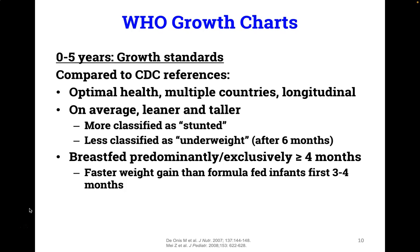When you use the WHO growth curves, this population was generally leaner and taller, which means more children are classified as stunted or short stature when replotted on the WHO curve, while fewer are classified as underweight. Similarly, fewer will be considered to have failure to thrive when using weight less than the third percentile. Formula-fed infants tend to be lighter in the first three or four months relative to breastfed populations, and therefore more likely to be considered failure to thrive on the WHO curve. However, formula-fed infants tend to become heavier after the first four to six months, so this should be considered to avoid unnecessary investigations or counselling.